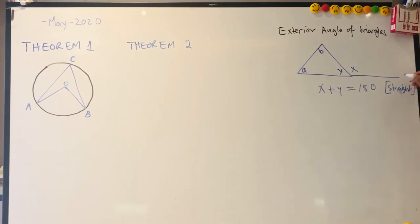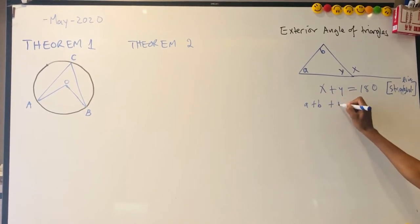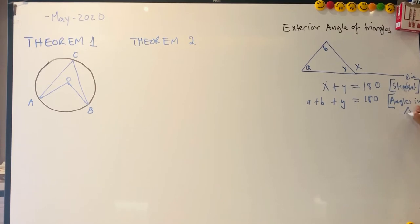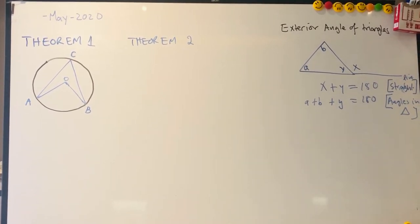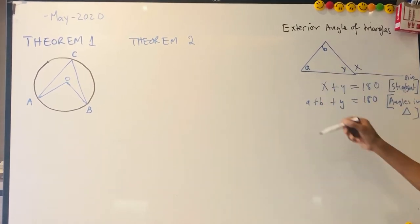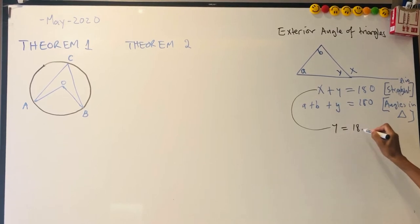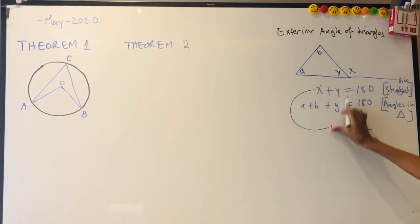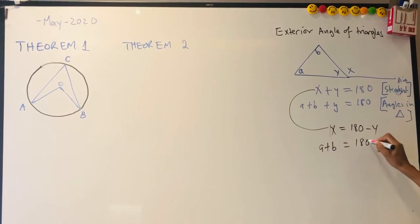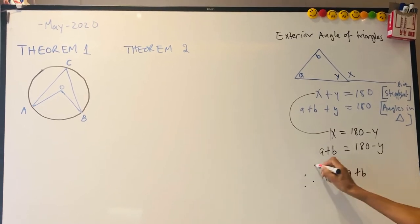You also know that a plus b plus y is equal to 180, and the reason is: angles in a triangle. Now, 180 equals 180 and y equals y, so x is equal to a plus b. You can rewrite it: x is equal to 180 minus y, and a plus b is equal to 180 minus y. So if this side equals that side, therefore x is equal to a plus b.